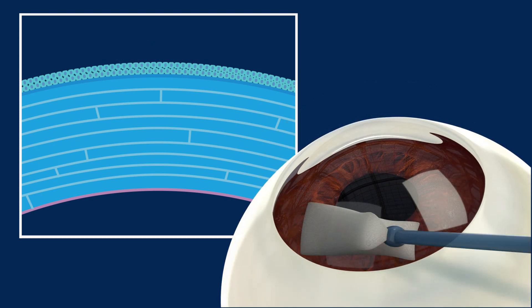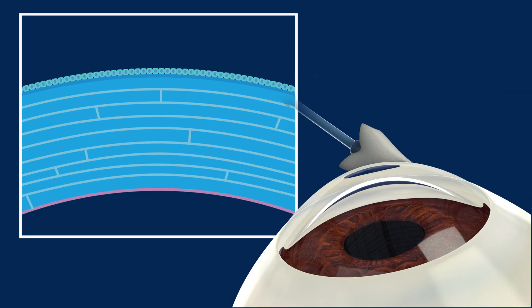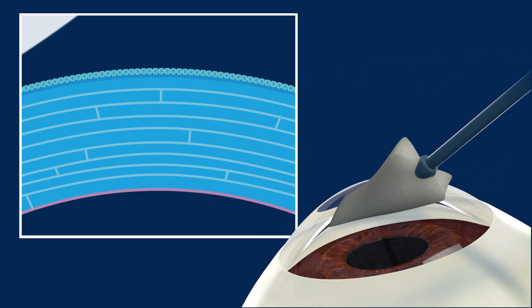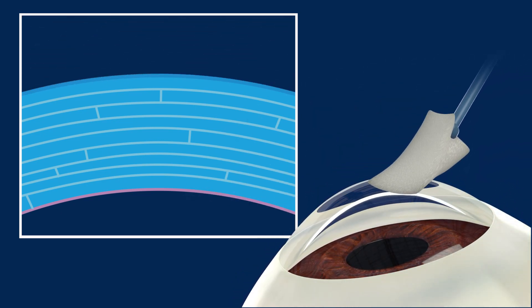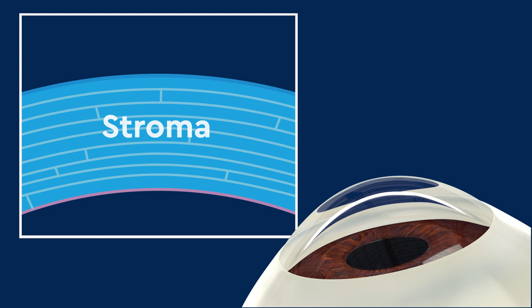The epithelium is wiped away, exposing a thick layer called the stroma, which contains a binding protein called collagen.